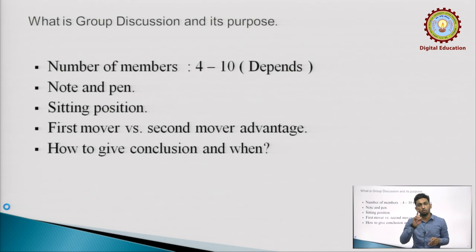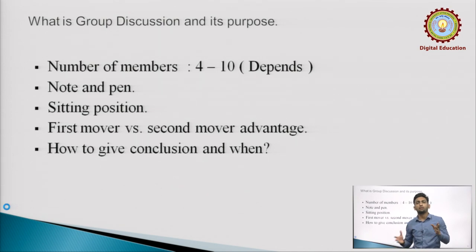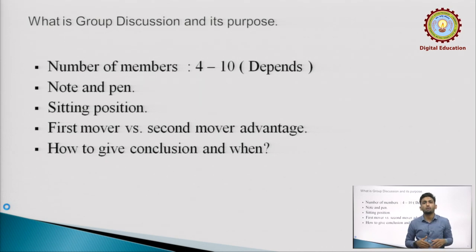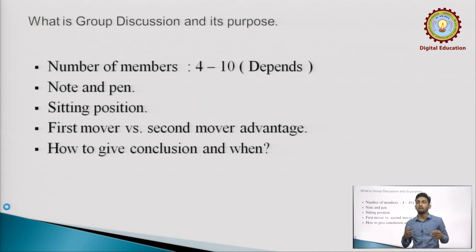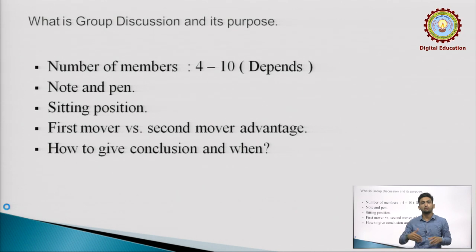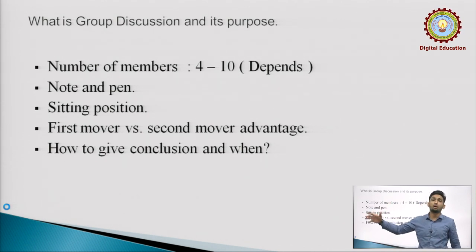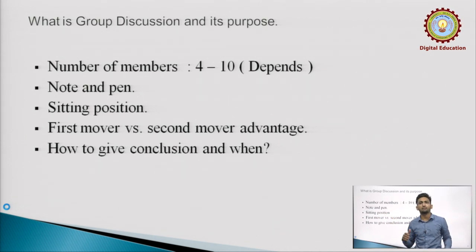The first and most important thing is: will you be able to speak or not? Then come the secondary things like leadership skills, whether you are able to generate ideas, contemplate, and control the group. The number of members in a group is 4 to 10, depending on the strength of students. If participation is in the hundreds, groups are made of 10 to 15 people.